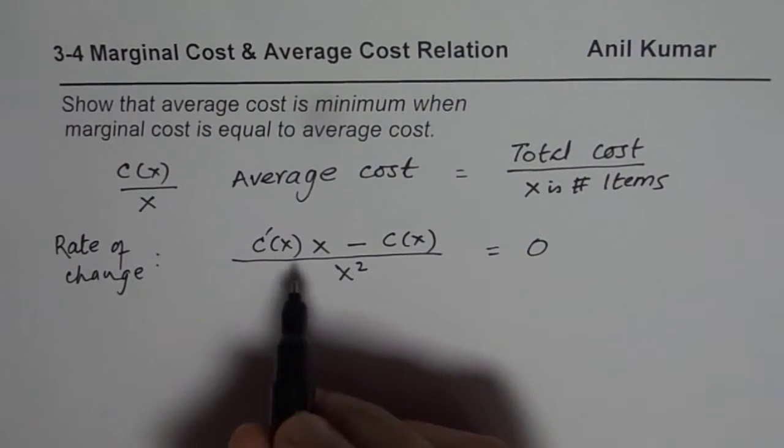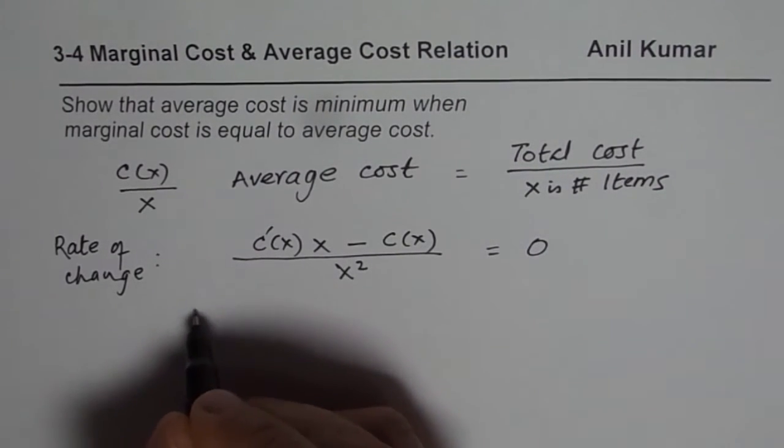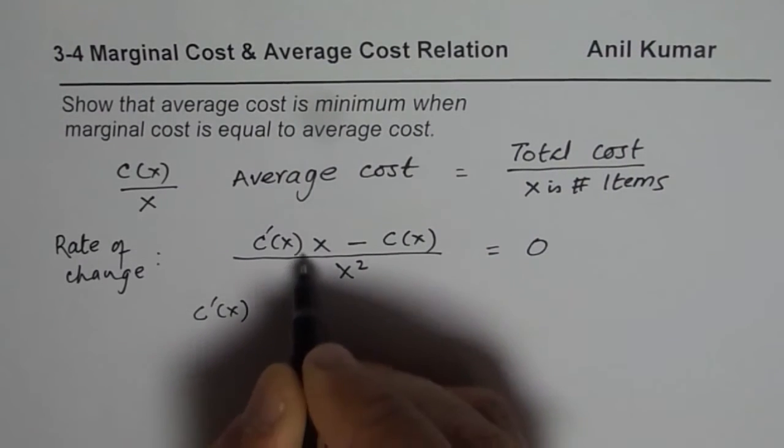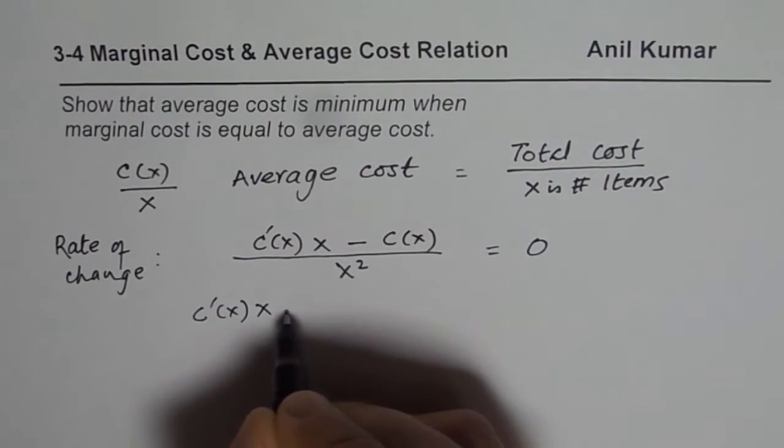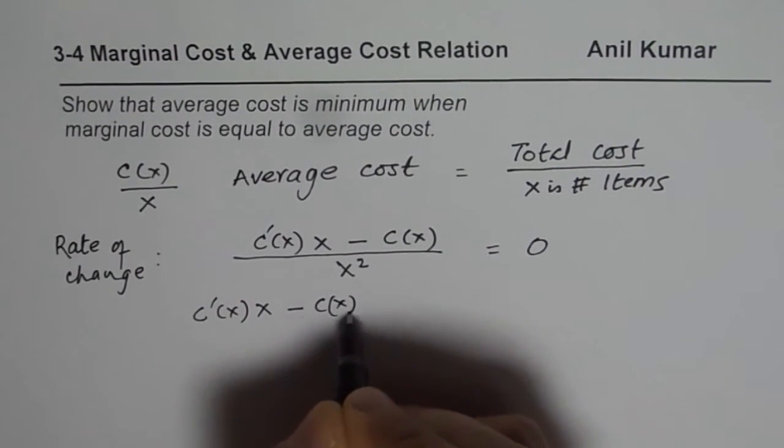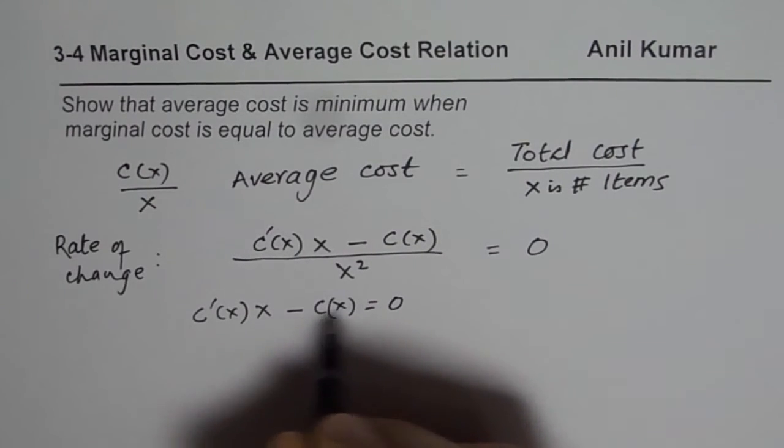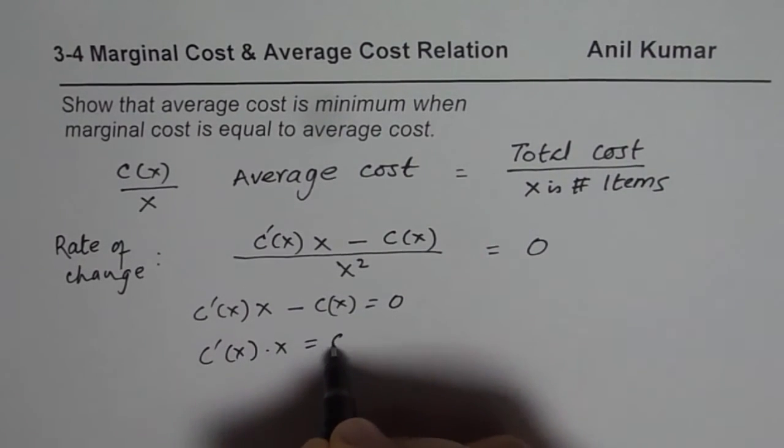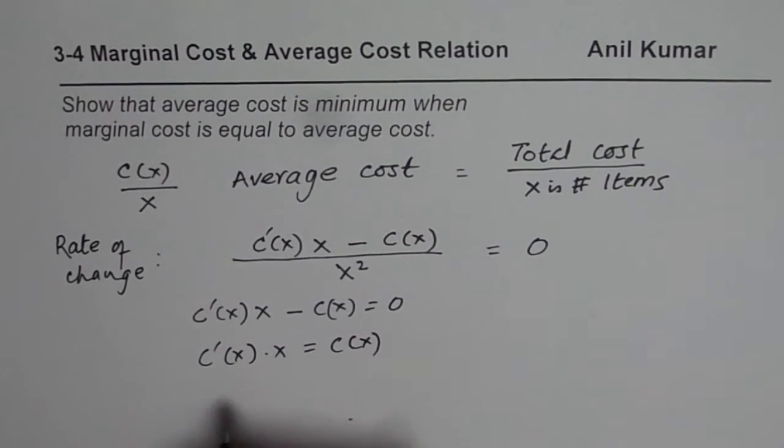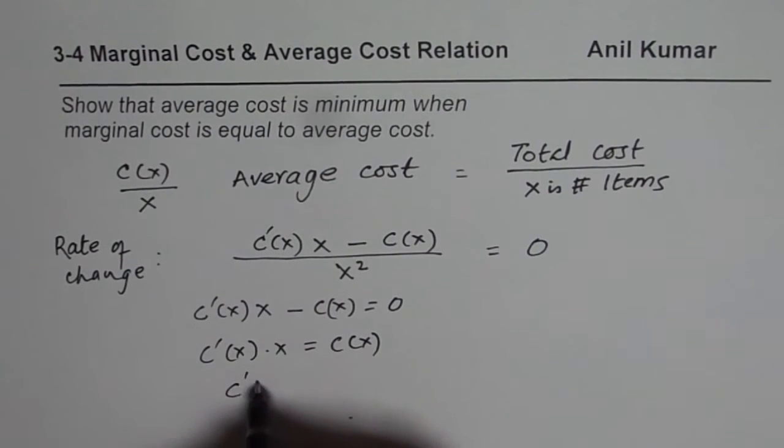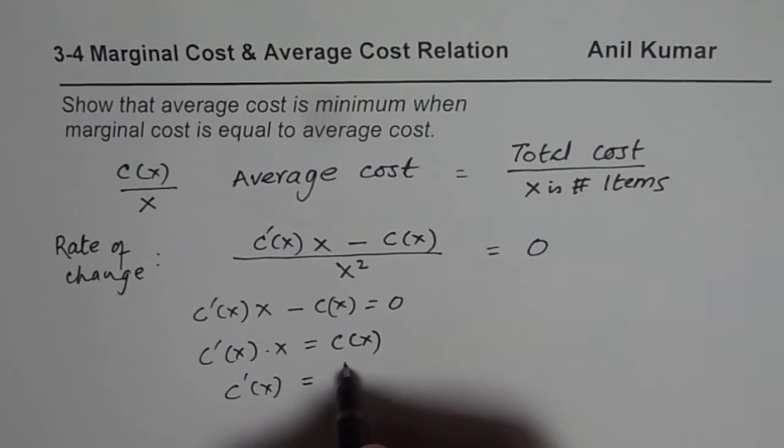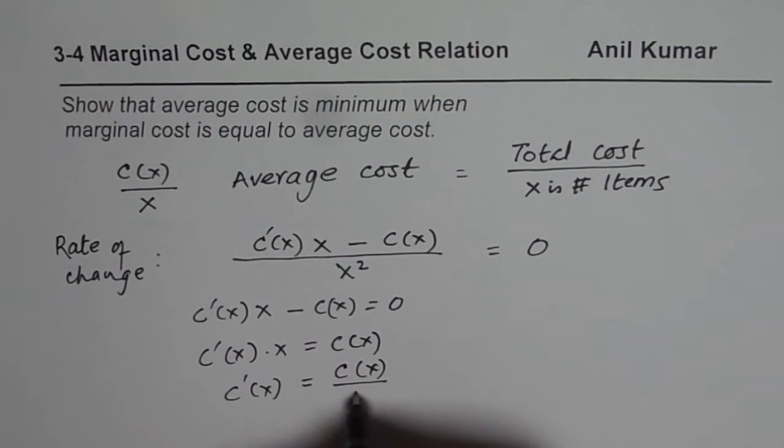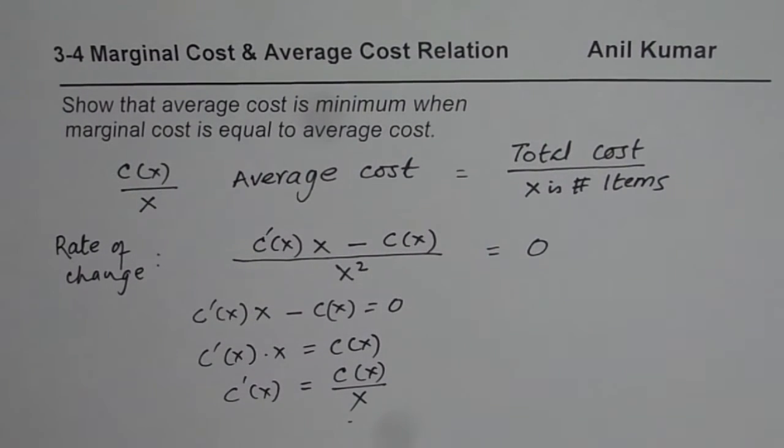Now, this will be 0 only for c'(x) times x minus c(x) is 0. And that is to say that c'(x) times x is equals to c(x). Or we can say c'(x) is equals to c(x) over x.